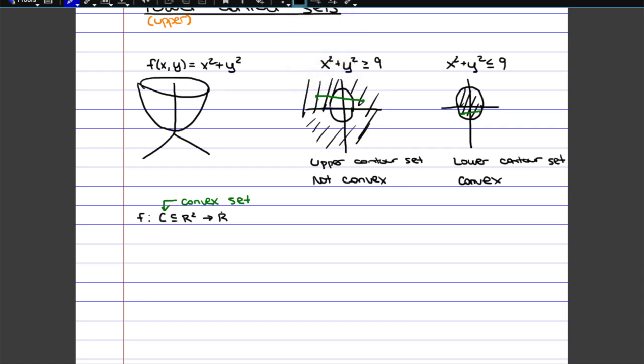So if the function has a convex set and the function itself is convex, then we can say that all the lower contour sets are going to be convex.